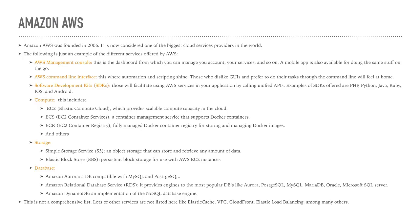For storage, we have S3 — Simple Storage Service — a very well-known Amazon service that provides object storage capable of storing and retrieving any amount of data from the web. Additionally, we have EBS — Elastic Block Store — which provides persistent block storage for use with AWS EC2 instances. This is just an example of the storage services available in AWS; the list is much larger.